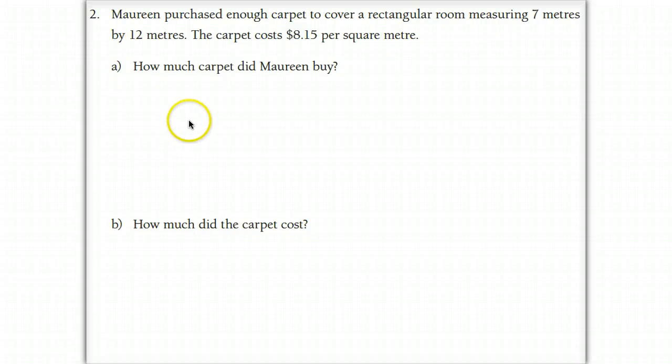This is question number two in practice your new skills on page 32. We're told that Maureen is purchasing enough carpet to cover a rectangular room measuring 7 meters by 12 meters.